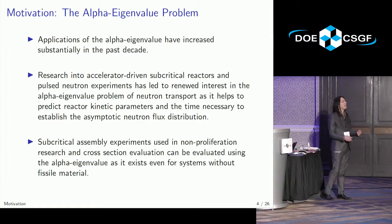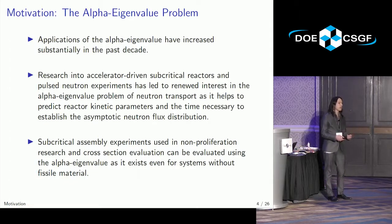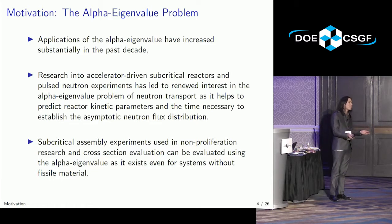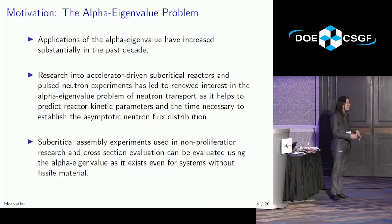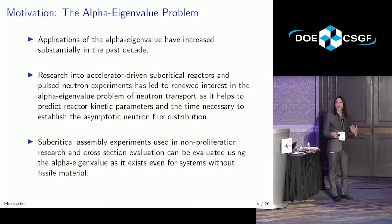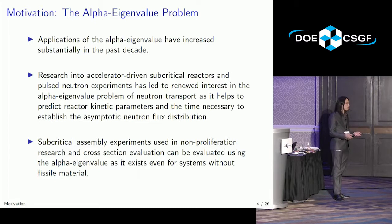The alpha eigenvalue problem is a way to measure the criticality of a system. Criticality defines whether or not a self-sustaining neutron chain reaction is possible in some system. For a nuclear reactor, you hope so. The alpha eigenvalue problem is sort of like the redheaded stepchild of eigenvalues in the nuclear community, but recently it's had increased attention. In particular, there's research into accelerator-driven subcritical reactors and pulsed neutron experiments that are used in anything from neutron cross-section measurement to burning of actinides, which might be one solution to our nuclear waste problem.